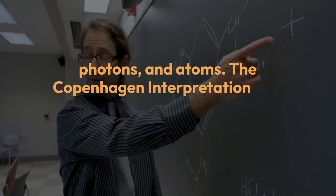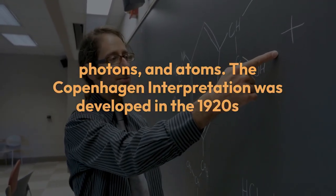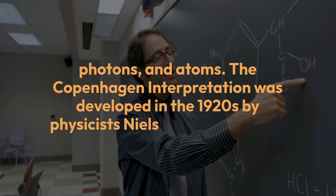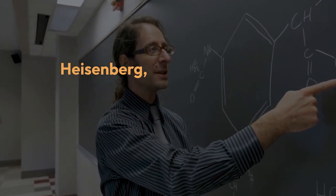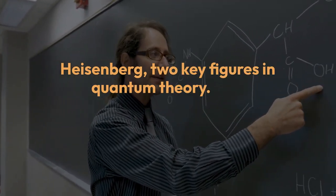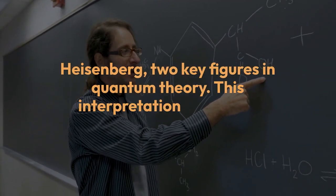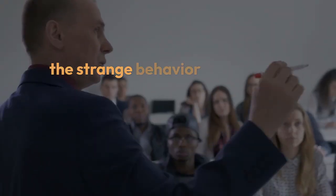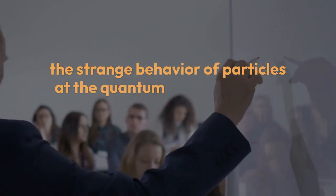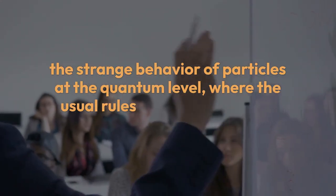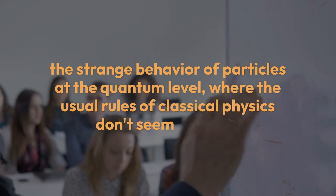The Copenhagen Interpretation was developed in the 1920s by physicists Niels Bohr and Werner Heisenberg, two key figures in quantum theory. This interpretation addresses the strange behavior of particles at the quantum level, where the usual rules of classical physics don't seem to apply.